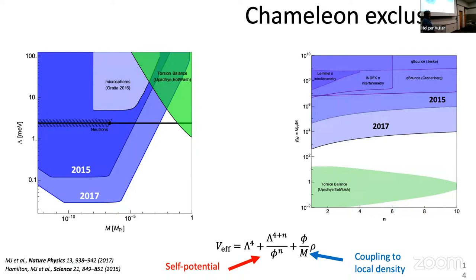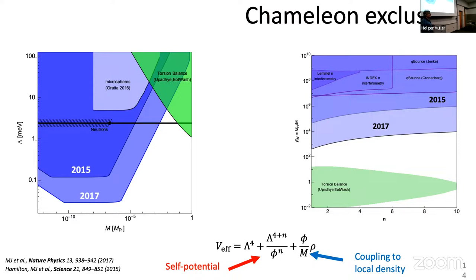We've used that to probe some of these fifth force theories. This is a hypothetical particle known as the chameleon. It has been proposed in the context of explaining the accelerated expansion of the universe. There's a parameter space characterized by coupling constant M and a self-coupling constant lambda. People have used all sorts of methods to rule that out. For example, torsion balances. And our atom interferometer results from 2015 and 17 cut into that parameter space relatively deeply. So those are two applications of this cavity-based atom interferometer before it became a lattice-hold interferometer.